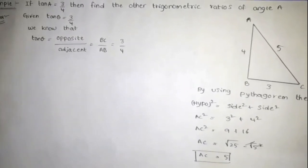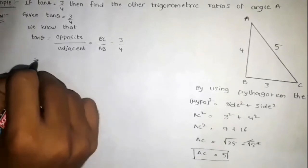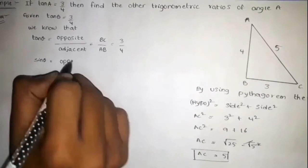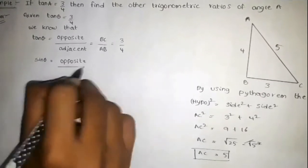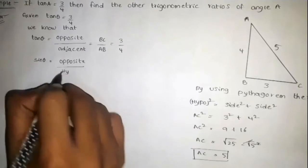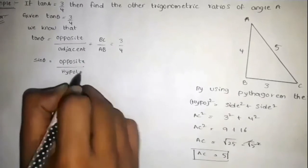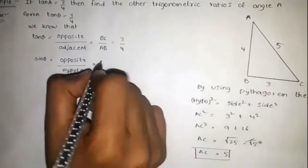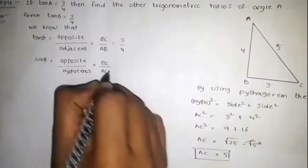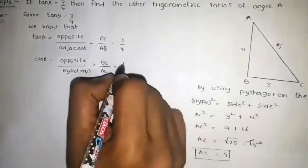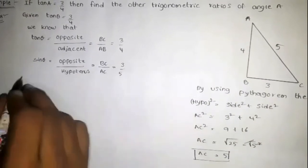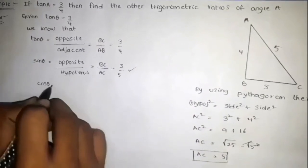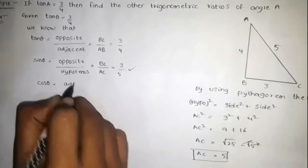Now we can find the other trigonometric ratios. Sin theta equals opposite side to theta by hypotenuse, that is BC by AC, which gives us 3 by 5. So sin theta is equal to 3 by 5. Next, cos theta equals adjacent side to theta by hypotenuse.